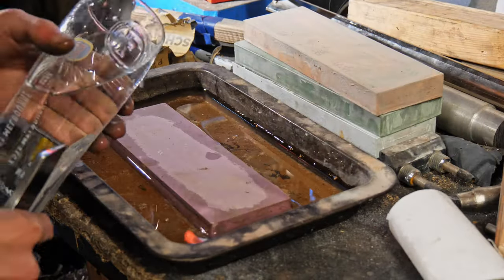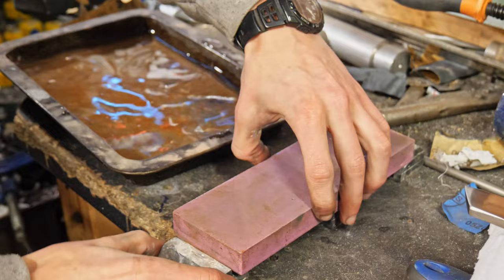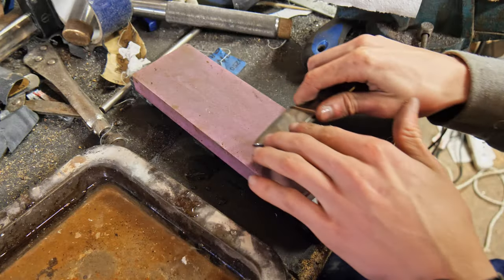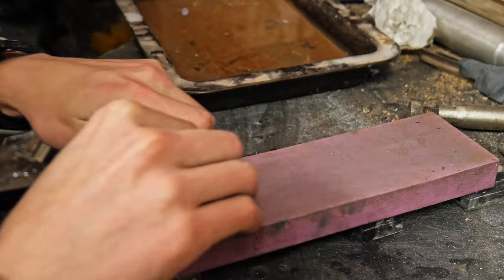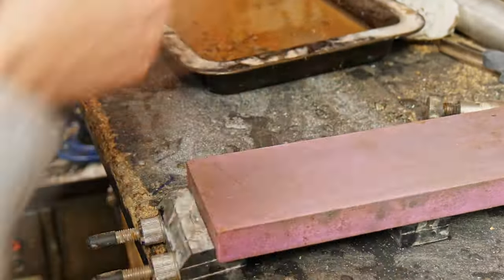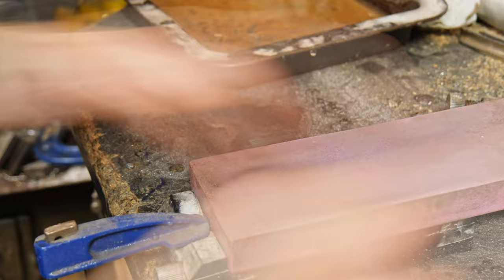So the final step in the knife making process is to put an edge on the blade. Initially I have to do a lot of roughing with a 240 grit whetstone. This puts the first edge on the blade and sets the angle of the edge.